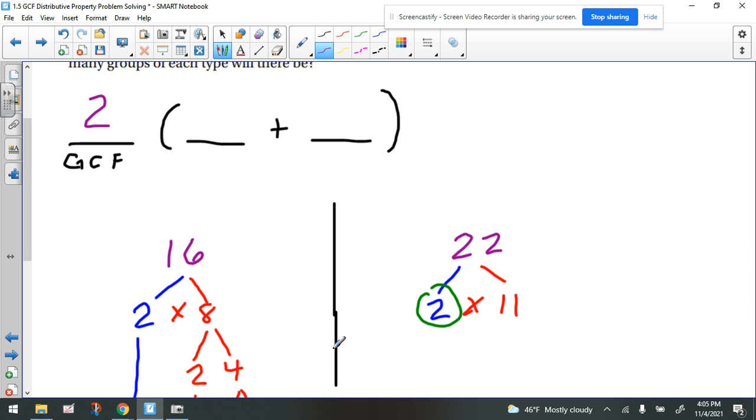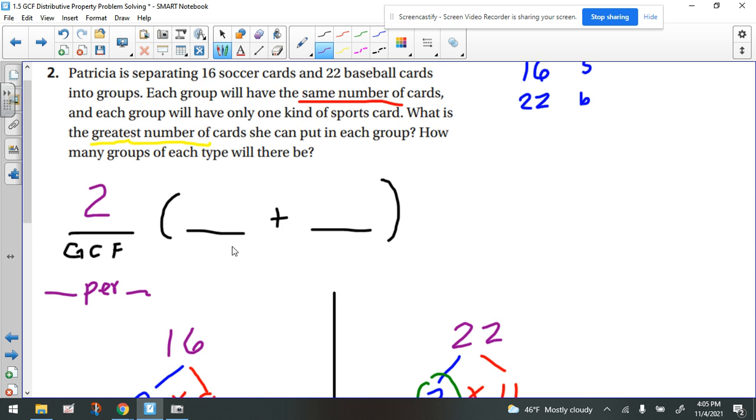Now I like to right away ask ourselves, to what? Because usually this is going to be a something per something. Let's try to figure that out. Let's look at the problem again. What is the greatest number of? And then we're talking about cards per group. Cards per group. Each group would imply one group. Now why is it important to write down these words? Because you're going to have a bunch of numbers when you're done, and you're not going to know which number goes with what if you don't label things.